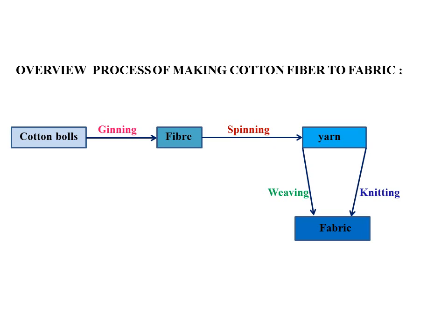You can make an overview of the full process from fiber to fabric. Cotton balls are obtained from cotton plants; from the cotton balls, through the process of ginning, we get the fiber. The fiber is then spun to make yarn, and yarn is made into fabric by two processes: weaving and knitting.